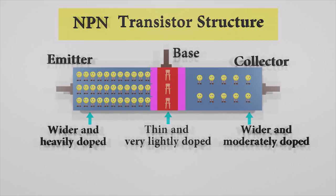The base region is diffused in between the wider emitter and collector regions. But the base region is quite thin compared to the outer emitter and collector regions. But also, it is very lightly doped, so the number of holes is quite small.